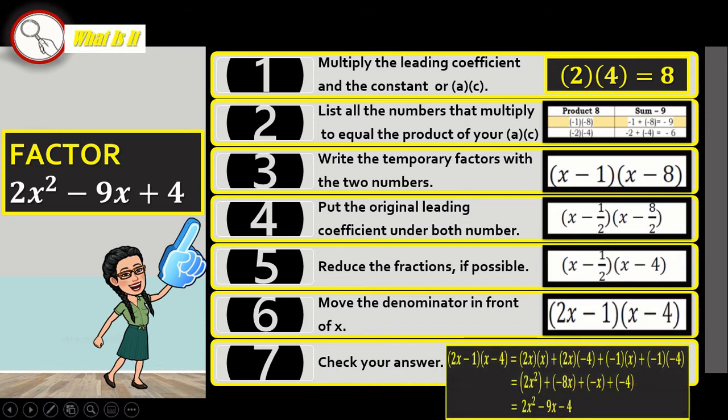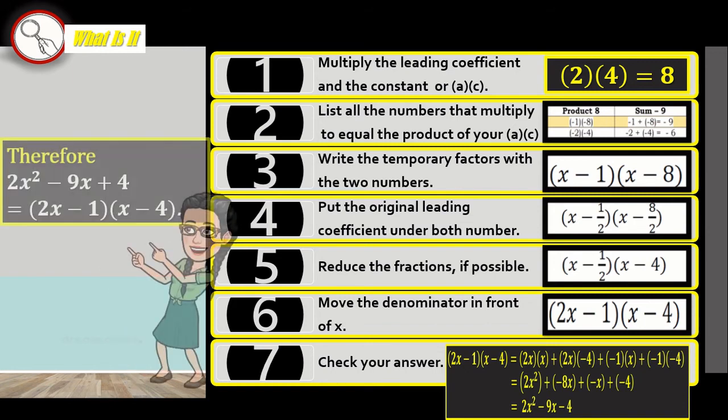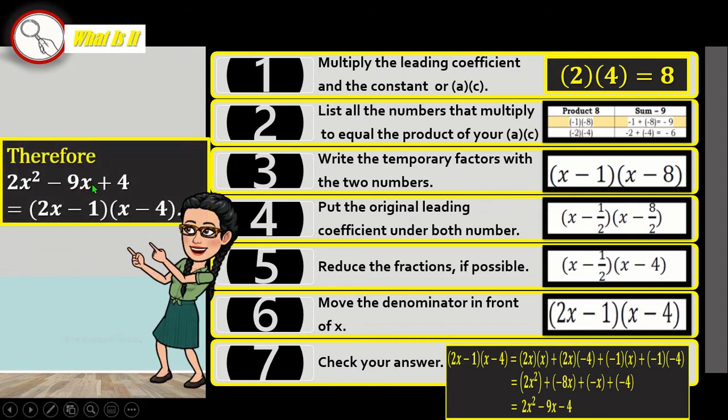And then lastly, we check our answer using—that is right, you are actually listening attentively—that is the distributive property of multiplication. Good job. And so therefore, 2x squared minus 9x plus 4 is equal to the quantity of 2x minus 1 times the quantity of x minus 4.